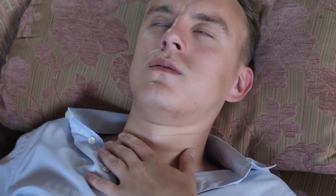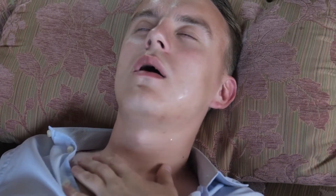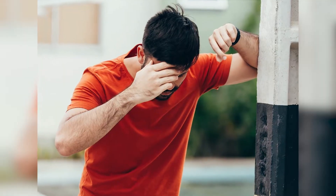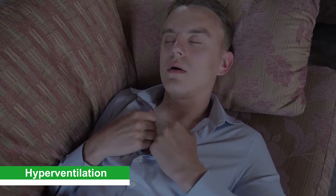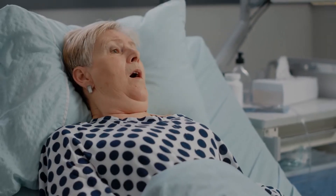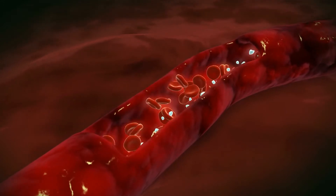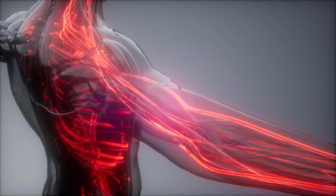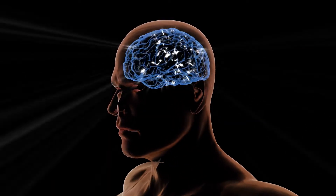Physical occurrences: Fainting is frequently caused by overheating or being in a crowded, poorly ventilated environment. Standing for an extended period or getting up too quickly after sitting or sleeping can lead someone to faint. Hyperventilation: A hyperventilating person takes rapid breaths. As a result, the level of carbon dioxide in the blood decreases, forcing blood vessels to constrict. As a result, the blood supply to the brain is reduced, causing a person to faint.